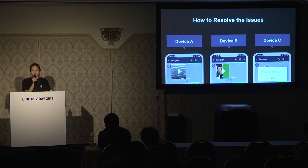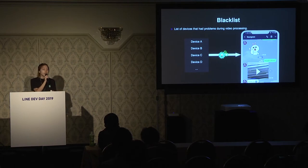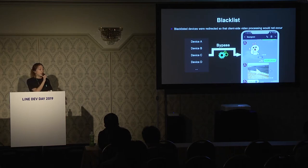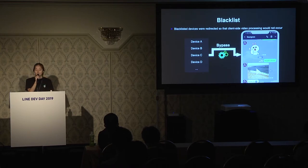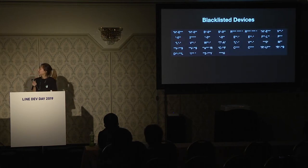As you can see, the problems were dependent on each device, so it was really hard to solve those problems with a single solution and really hard to figure out the root cause. So I gave up finding a general solution. Instead, I made a blacklist — a list of devices that have a problem in video processing. For a device in the blacklist, video processing is bypassed, so the original video is directly shared without any processing. At first, the number was very small, so I could manage. But as time went on, the list got bigger and bigger.